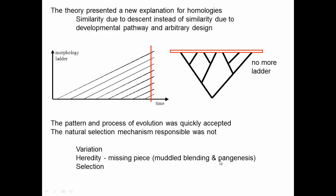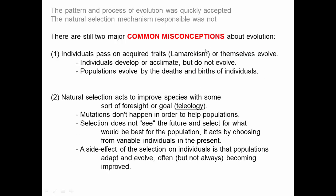In later editions of his book, Darwin tried to add heredity, but ended up with a weird mix of blending inheritance — which isn't true — and pangenesis, which is essentially Lamarck's idea of use and disuse. There was no good explanation of heredity that Darwin could put forward. So during Darwin's lifetime, the evolution part was accepted but natural selection was not, and it was still being debated through the 1800s largely because heredity was poorly understood.